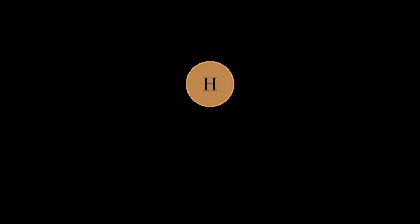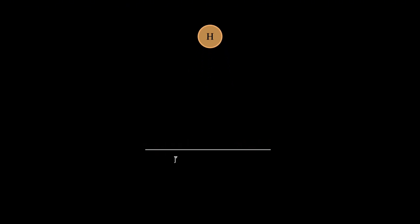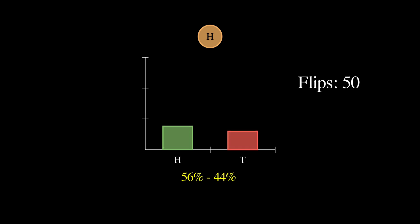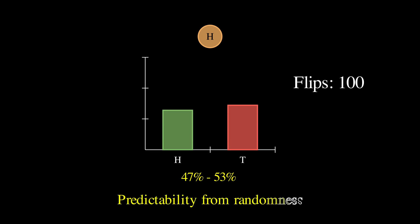Think about flipping a coin. If you flip it once, you have no idea whether it'll land heads or tails, but if you flip it a hundred times, you can be pretty confident you'll get close to 50 heads and 50 tails. This transformation from unpredictability to predictability is the heart of Monte Carlo, and it turns out we can use this same principle to solve problems that would be incredibly difficult or even impossible to solve any other way.